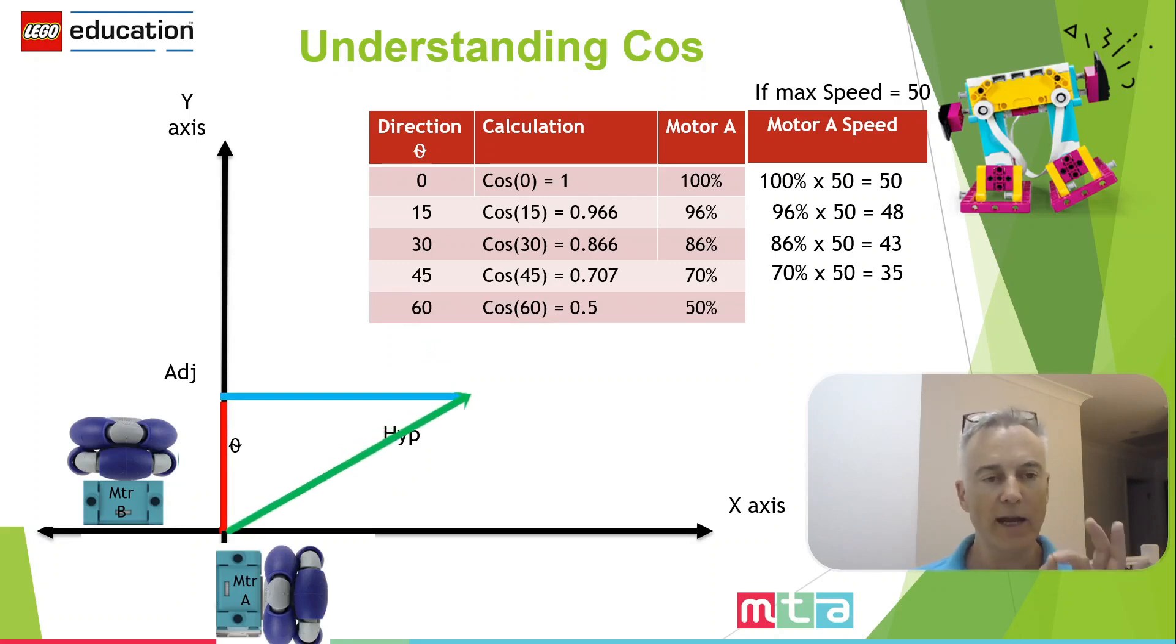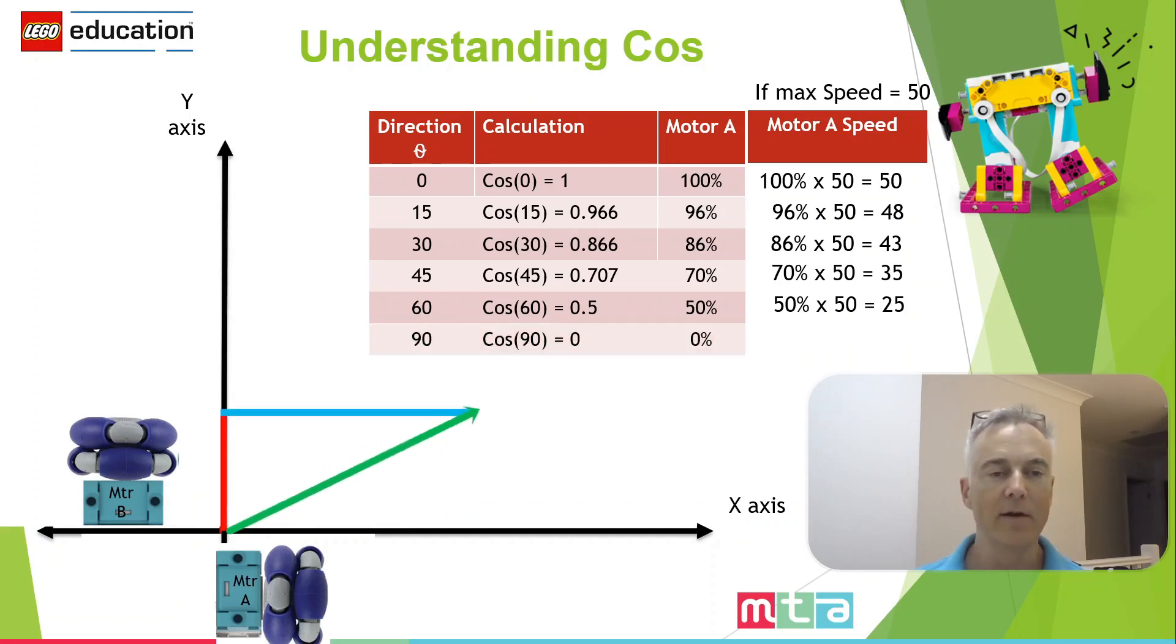Note at this stage, we're not doing any calculations for motor B. I don't want to confuse you. I just want to deal with what we're doing with motor A. And at 60, at that angle of 60, then we've got the motor working at half speed. And then at zero, you can see we've got, we're going to have motor A basically turned off and not running.